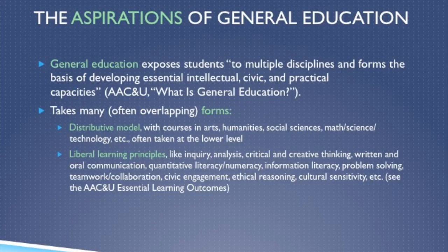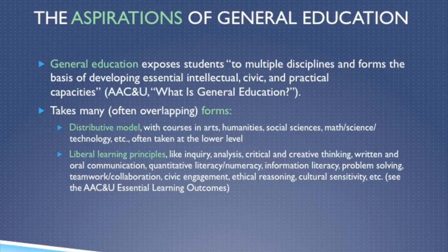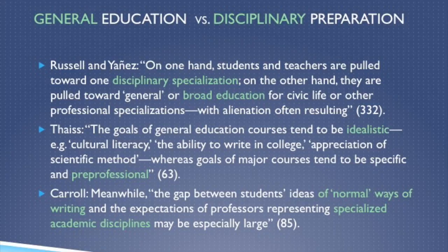We can point to two very broad versions of this vision of general education. The first is the really familiar distributive model, where students have to take a certain number of credits in the arts and humanities, a certain number in the sciences, and so on. The other model points more towards liberal learning principles — things like critical thinking, quantitative literacy, ethical reasoning, civic mindedness, and so forth. These aren't necessarily mutually exclusive; they often overlap at many institutions. But general education programs, in part because of their institutional existence, can produce a tension between general education and disciplinary preparation.